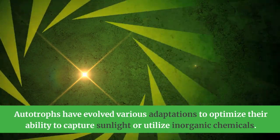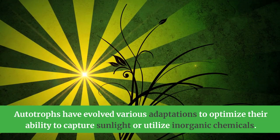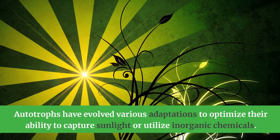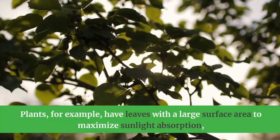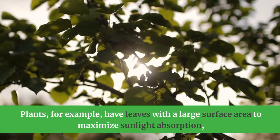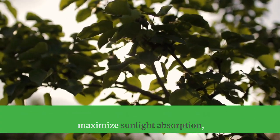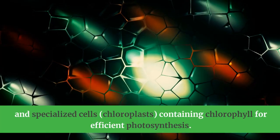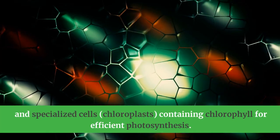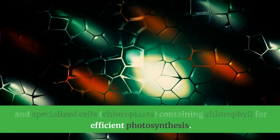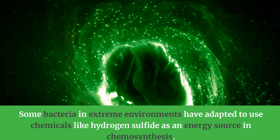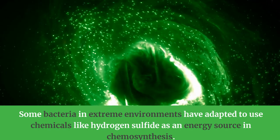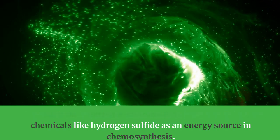Autotrophs have evolved various adaptations to optimize their ability to capture sunlight or utilize inorganic chemicals. Plants, for example, have leaves with a large surface area to maximize sunlight absorption and specialized cells containing chloroplasts with chlorophyll for efficient photosynthesis. Some bacteria in extreme environments have adapted to use chemicals like hydrogen sulfide as an energy source in chemosynthesis.